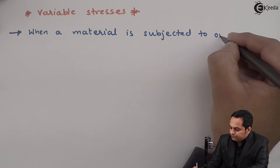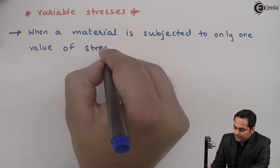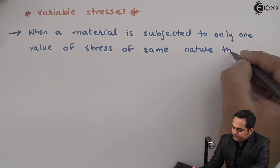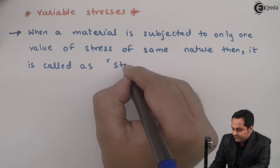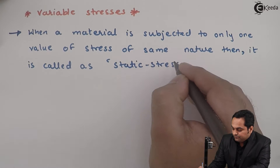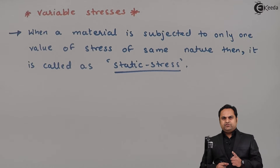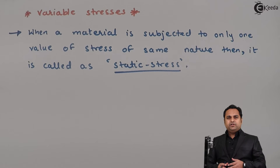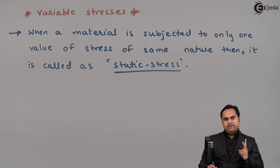When a material is subjected to only one value of stress of the same nature, then it is called static stress. That is, when a material is loaded with only one value of stress — if the stress is tensile it will remain tensile throughout, if it is compressive it will remain compressive throughout, with the same value. So that is called static stress: one value of stress and only one nature.